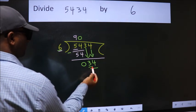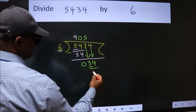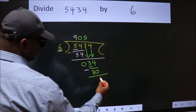A number close to 34 in 6 table is 6 fives 30. Now we subtract. We get 4.